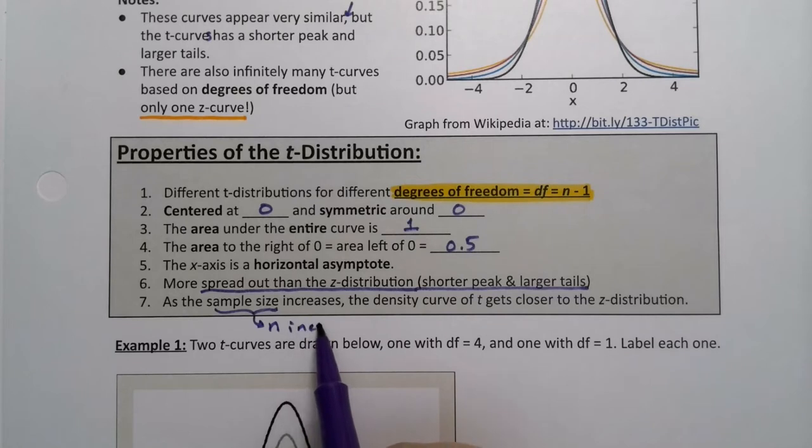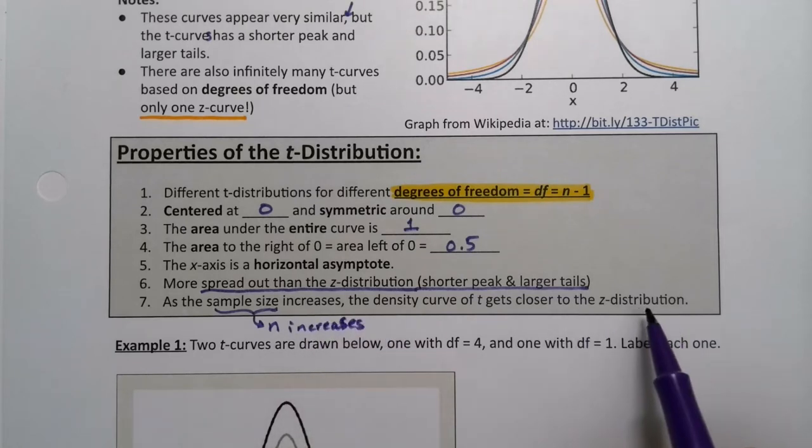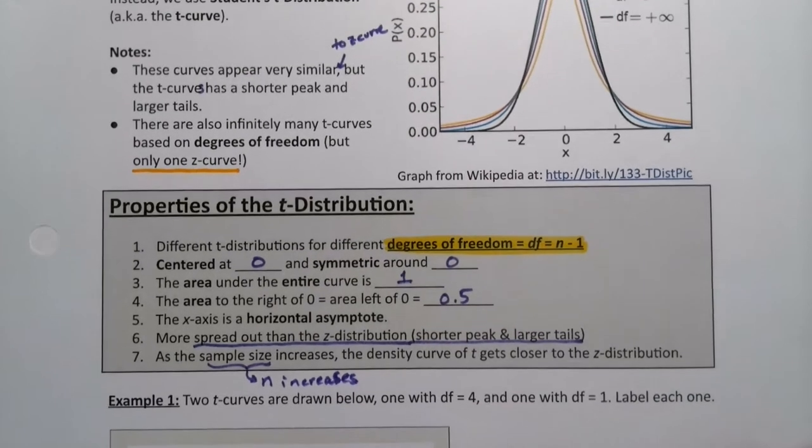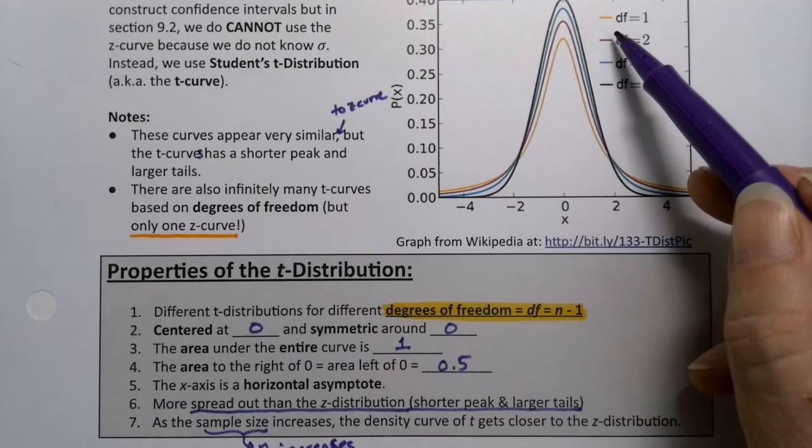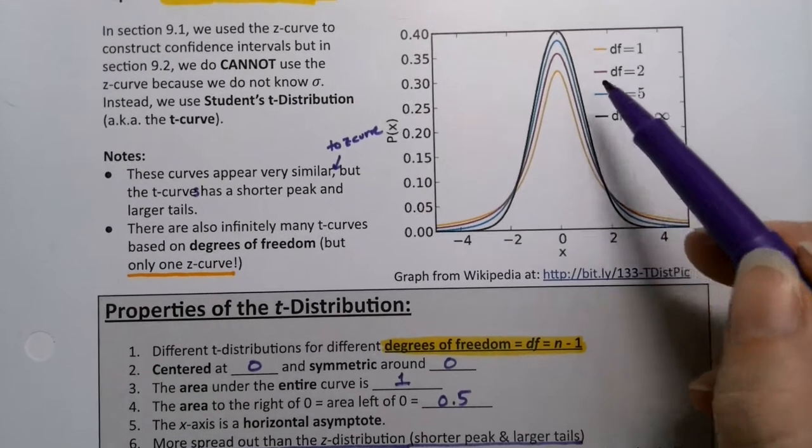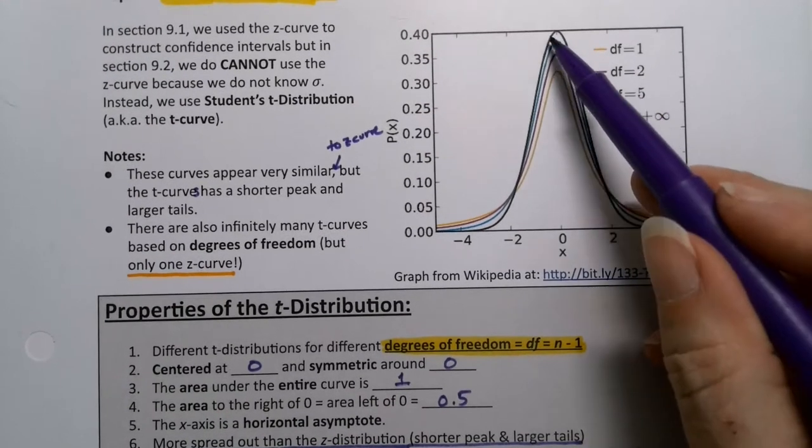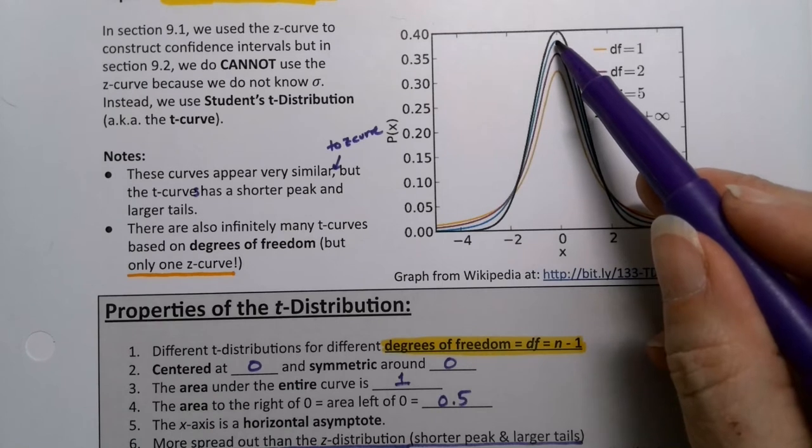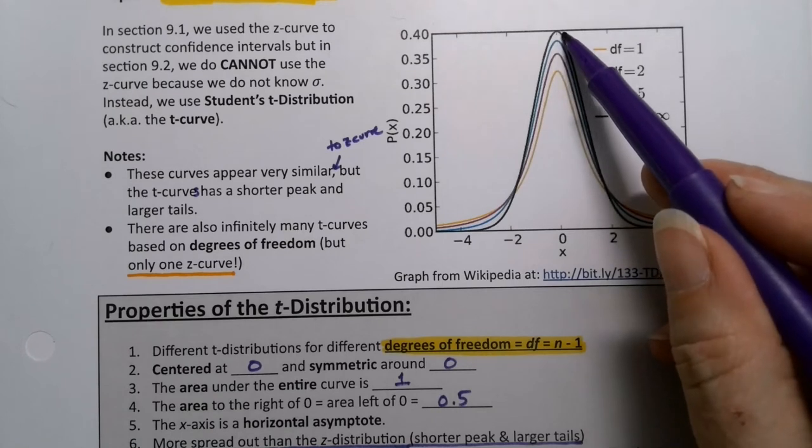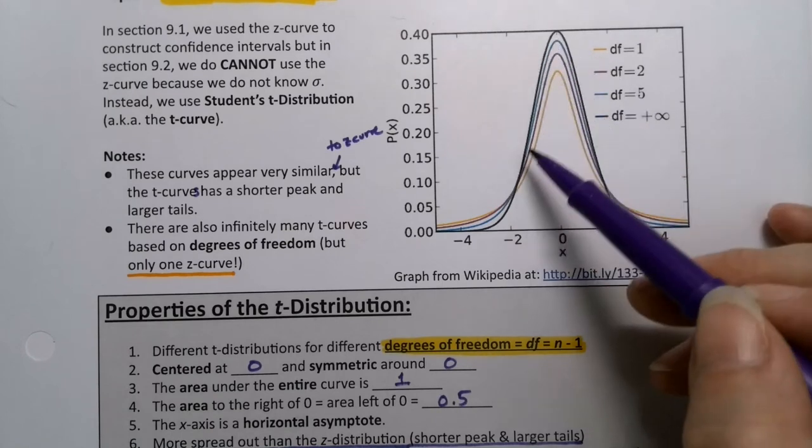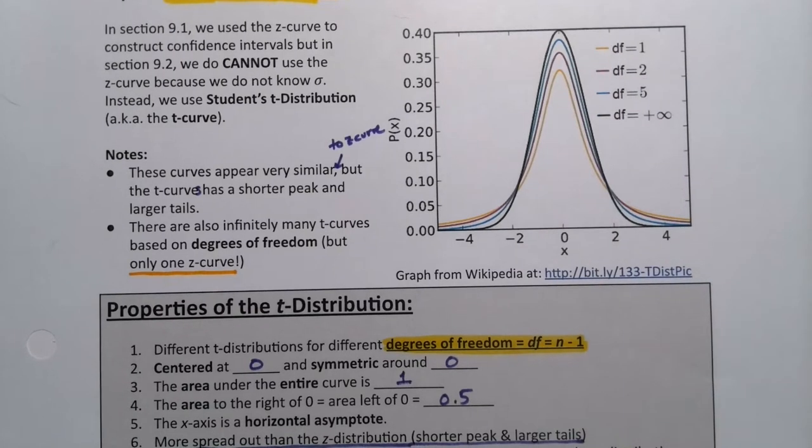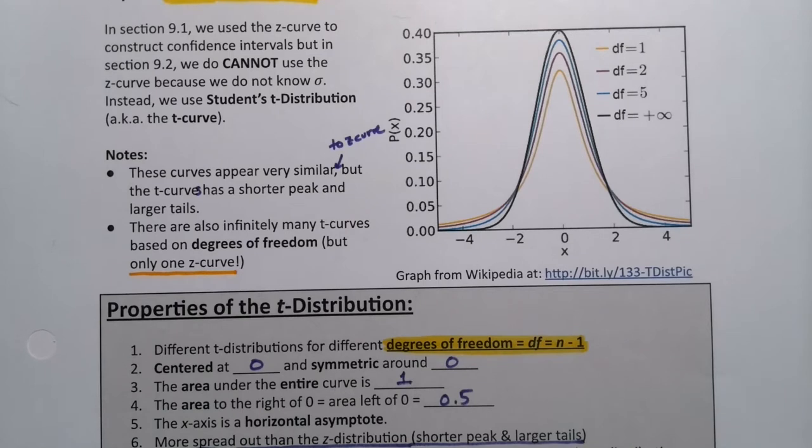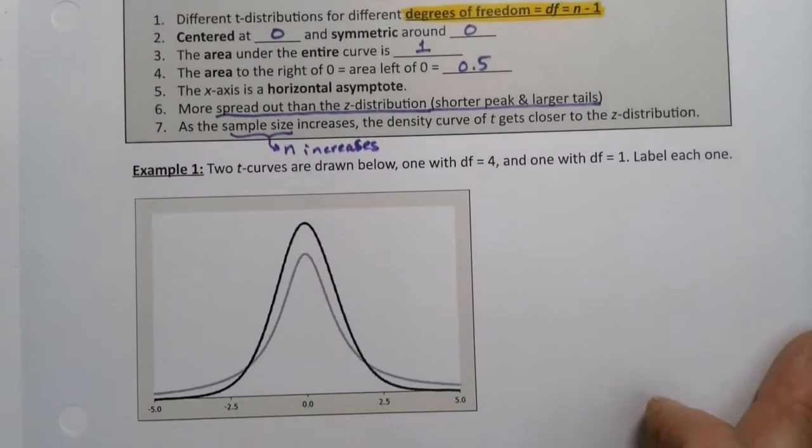Then the t curve gets closer and closer to the z curve. That's why you're seeing up here as my degrees of freedom increases, see the blue curve right there, which is degrees of freedom 5, has a much higher peak. It's getting closer and closer to the z curve, which is the best curve, the one we wish we could use but we can't, as William Seeley Gossett proved.